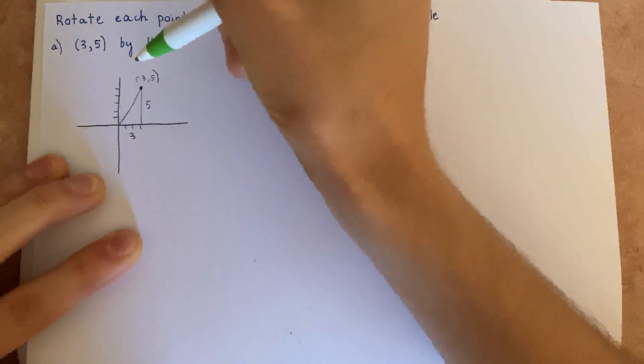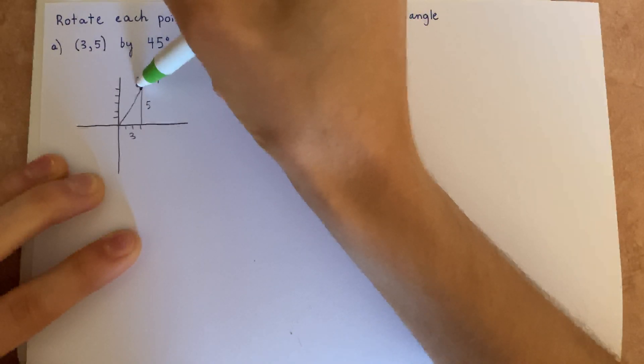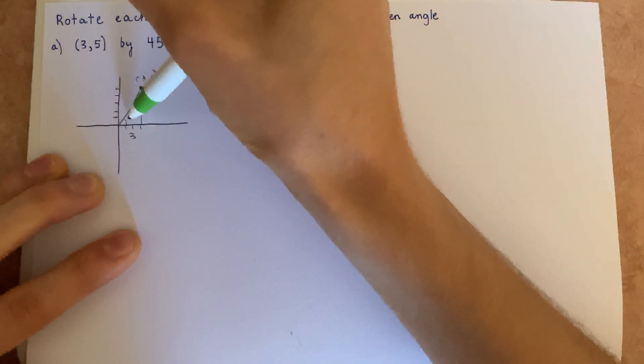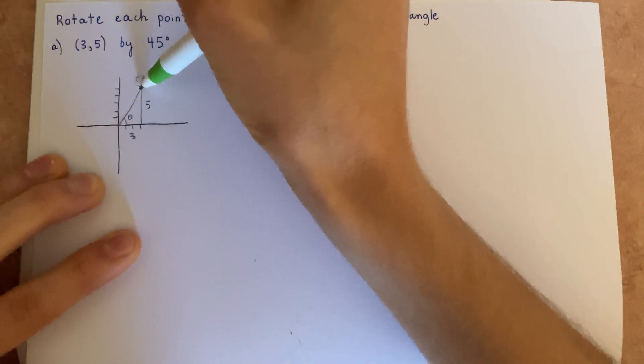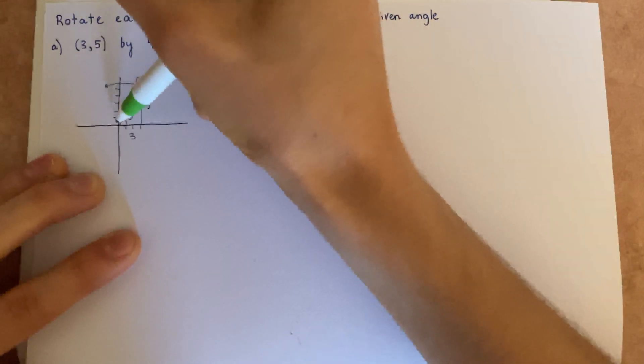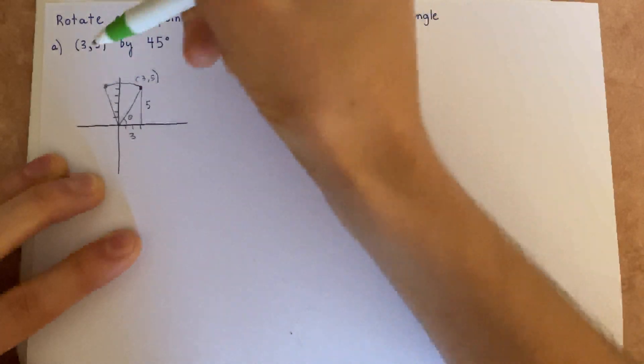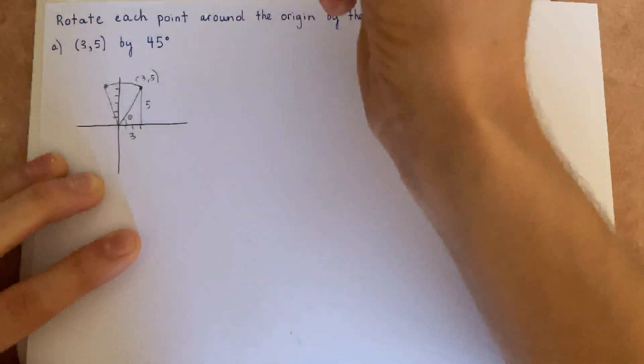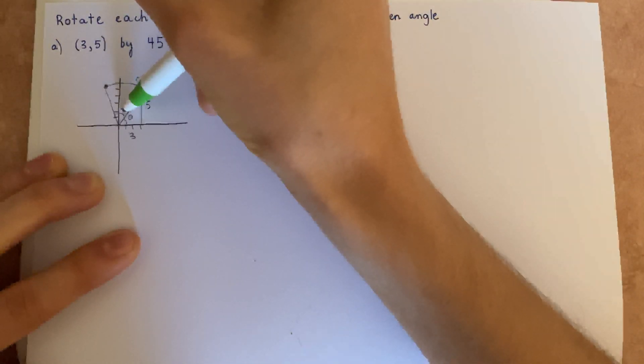Now what we're asked to do is rotate this by 45 degrees. Say this is any angle theta. We want to rotate that around the origin 45 degrees to give this point. And we want to know what this point is. So this is 45 degrees right here.